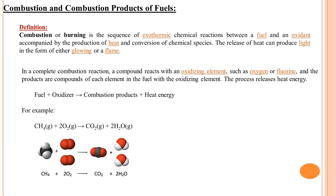To obtain the calorific value from a fuel, we need to combust it. Combustion or burning is a sequence of exothermic chemical reactions between the fuel and the oxidant, accompanied by the production of heat and conversion of chemical species. The release of heat can produce light either in the form of glowing or in the form of a flame.